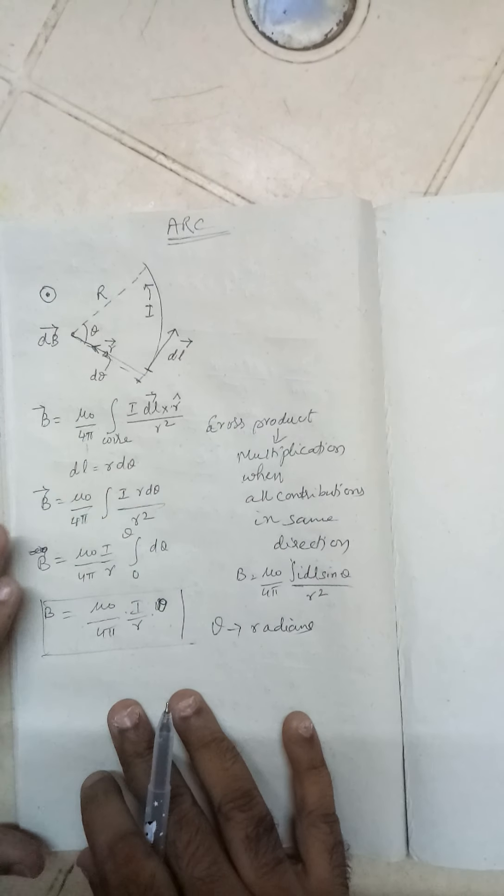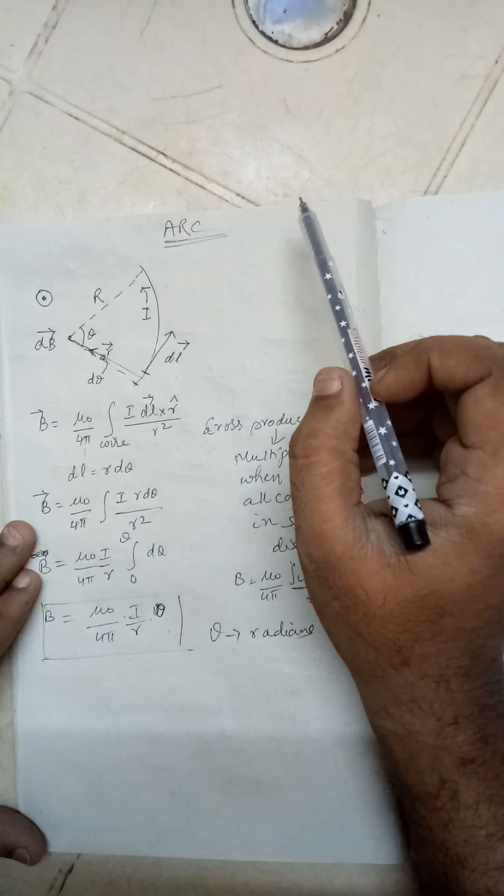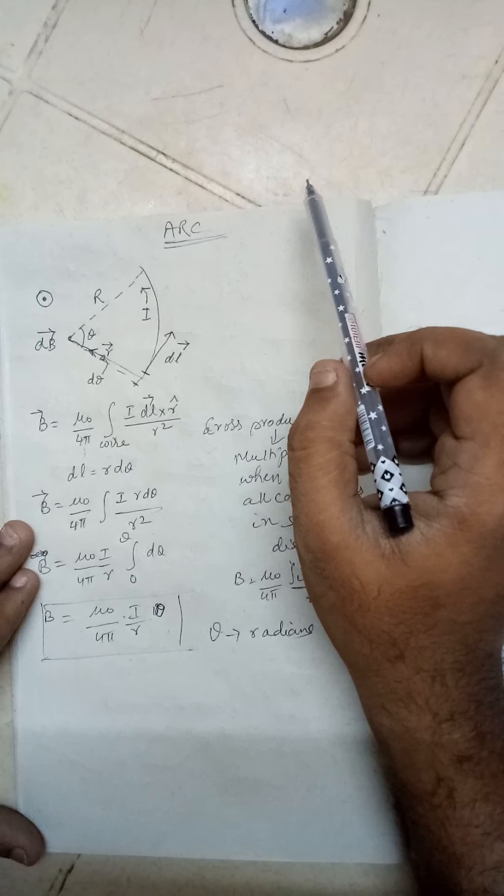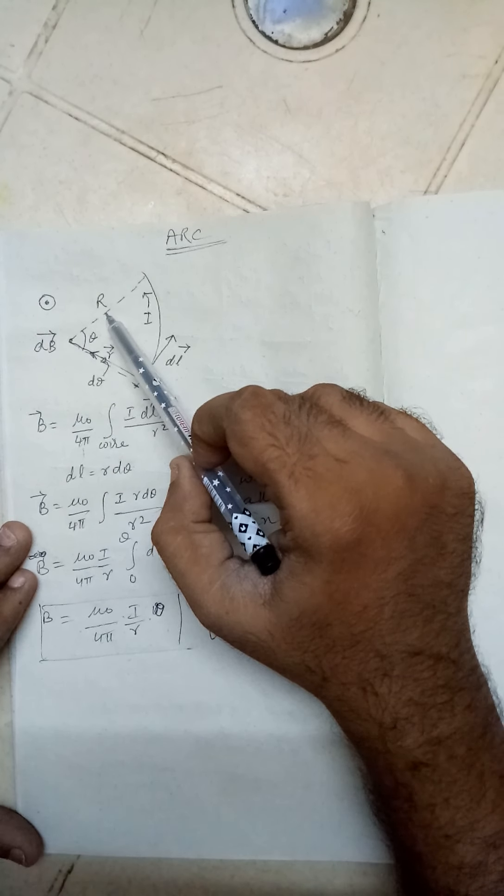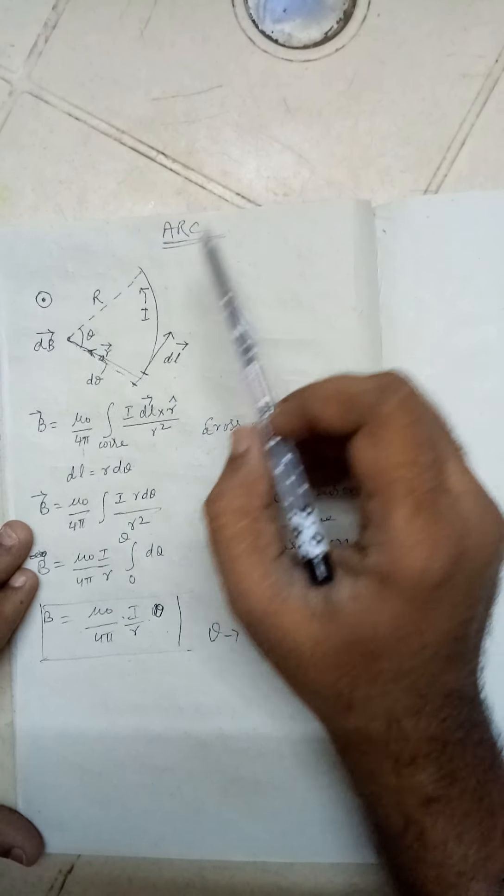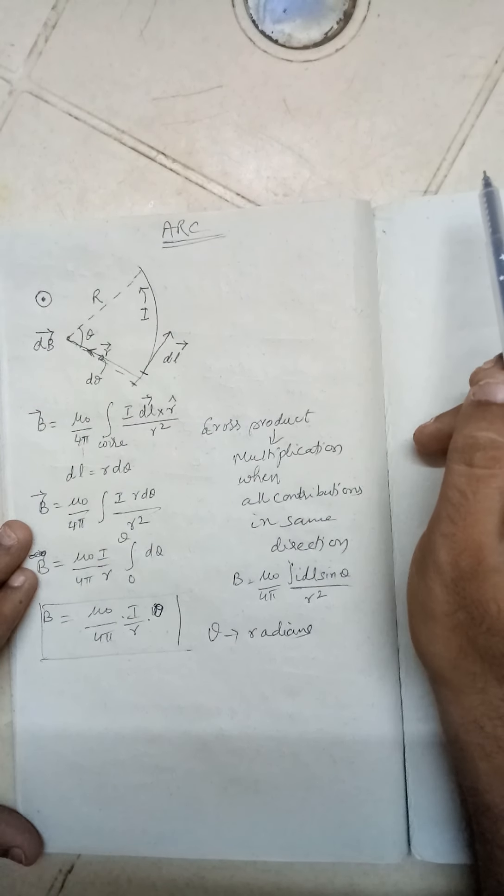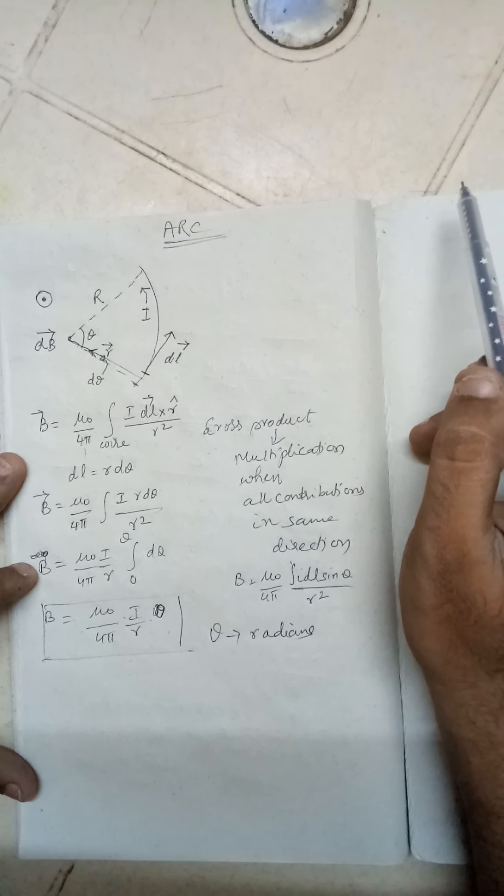Hello students, in this question they're asking what is the magnetic field of an arc of radius capital R and it is subtending angle theta. Arc, as you know, is a part of a circle.